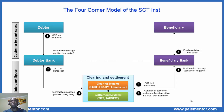In step 7, the beneficiary bank is sure that the SCT Inst was processed correctly and within the maximum execution time. It makes the funds available to the beneficiary and sends him a notification, generally per SMS or per email. The beneficiary can immediately use the funds. The notification of the beneficiary is not mandatory according to the SCT Inst scheme, but it is a truly value-added service for the beneficiary, and it is therefore a standard practice in the marketplace.